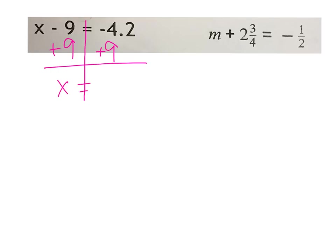On the other side, I have to think about my integer rules. I have a negative 4.2 plus a positive 9 — different signs subtract. So I'm going to do 9 minus 4.2. Don't forget to line up your decimals.